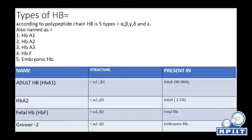Hemoglobin types are also named HbA1, HbA2, HbA3, HbAF, and embryonic HB. Humans can have 5 types of hemoglobin. Adult HbA1 has a structure of alpha-2 and beta-2 chains and is present at 90 to 96%. HbA2 has a structure of alpha-2 and beta-2 and is present at 2 to 5%. Fetal hemoglobin has a structure of alpha-2 and gamma-2 and is present in fetal life.